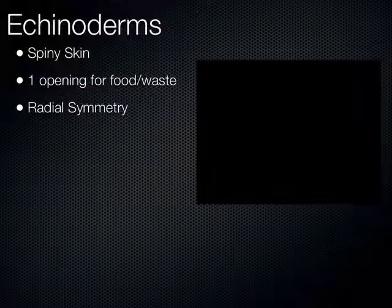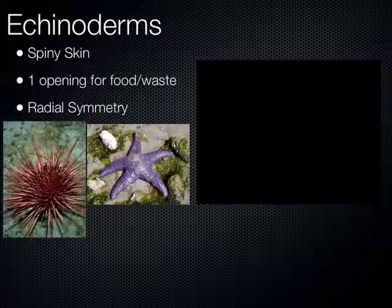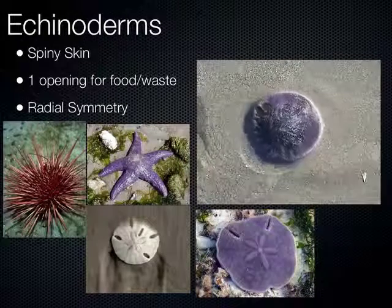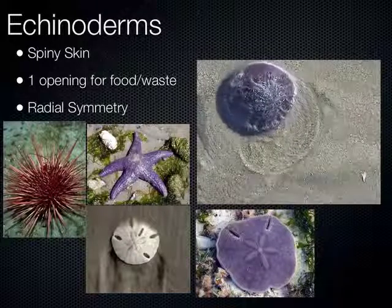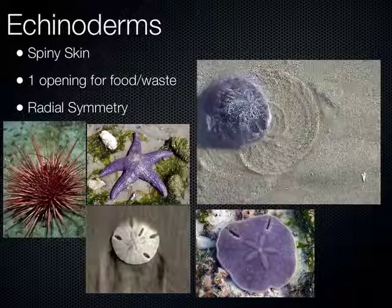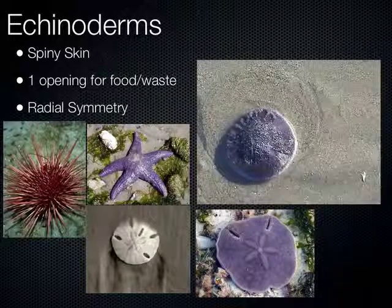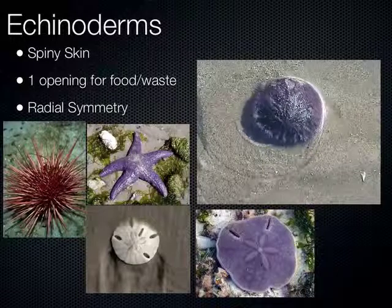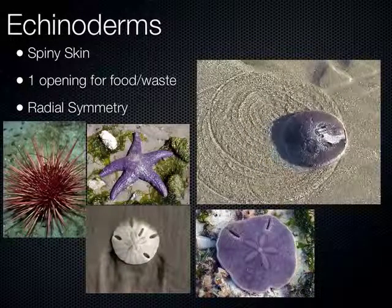The echinoderms — the name means 'spiny skin.' They have skeletons and sometimes spines, like the sea urchin. They generally have radial symmetry and one body opening for food and waste. This includes starfish, sand dollars, and similar organisms. Sand dollars move around using tube feet in a spiral pattern, filtering bits of food from sand and water. Starfish also have an amazing ability to regenerate — any part that includes some of the central disc can regrow into a completely new starfish. Fishermen used to chop up starfish and throw them back, but that only created more starfish.